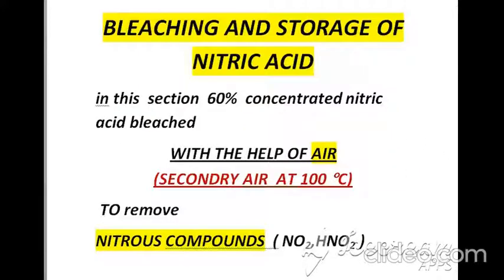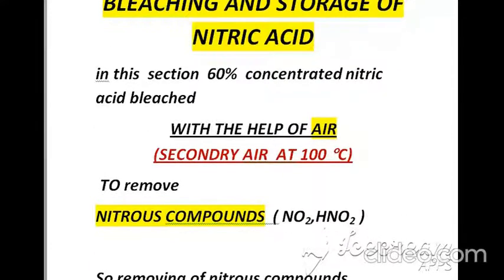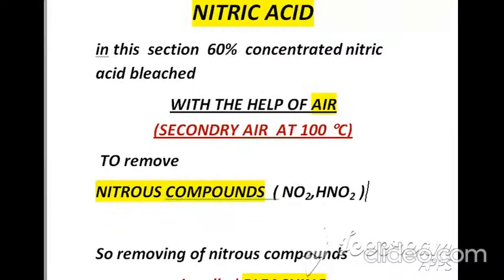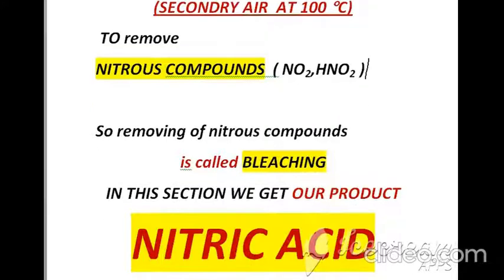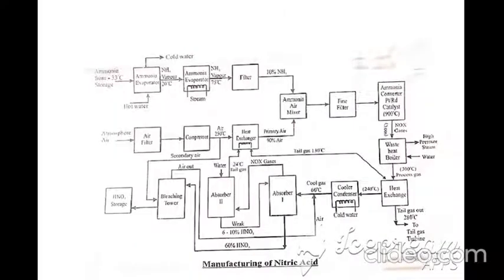The last section is bleaching and storage of nitric acid. In this section, the 60% concentrated nitric acid is bleached with the help of air to remove nitrous compounds. This process of removing nitrous compounds is called bleaching, and after that we obtain our product, which is nitric acid.